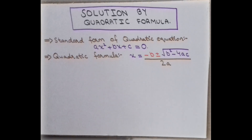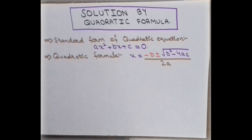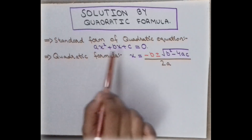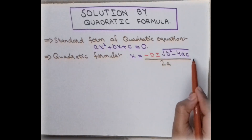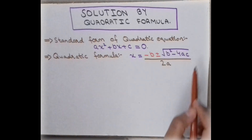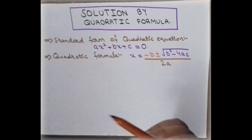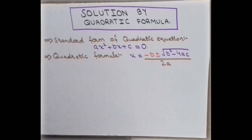Here is the standard form of the quadratic equation, where c is a constant and a and b are the coefficients of x² and x. This is the very important formula we use in all the questions. Now let us check out how to apply this formula to solve the quadratic equation.